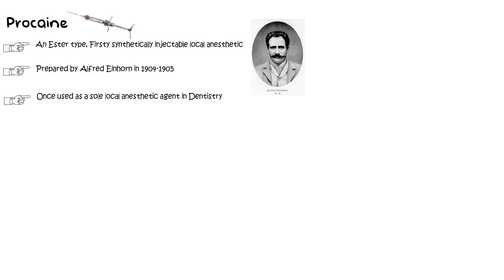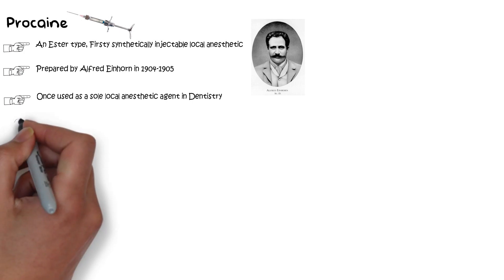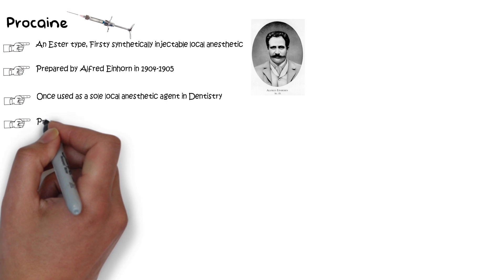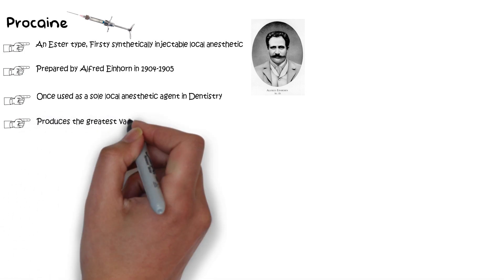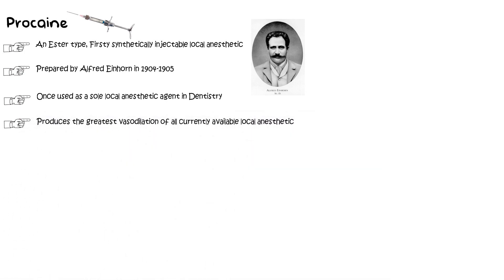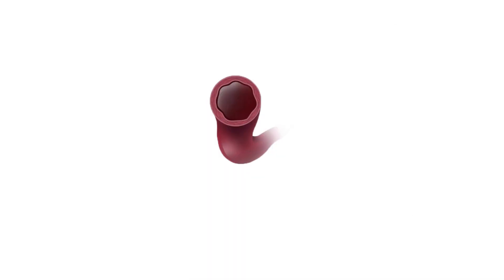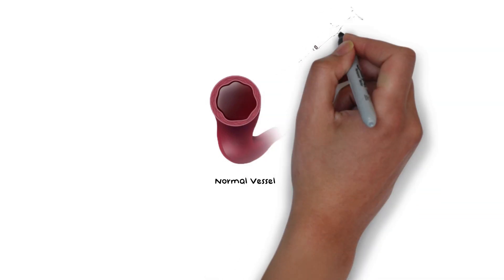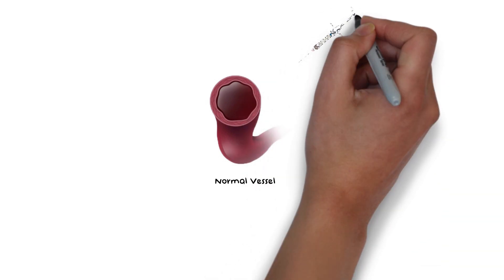Other than providing local anesthesia to the injected part, one of the effects of procaine was to produce vasodilation. In fact, it produced the greatest vasodilation of all currently available local anesthetics. Vasodilation means it causes the vessels in the injected area to dilate, which causes the local anesthesia to disperse quickly into the blood. Ideally, a local anesthetic should not be doing that.